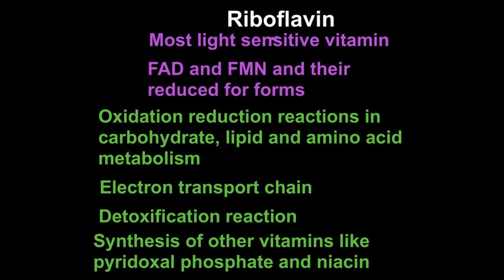The biological function of riboflavin is to make coenzymes in our body: flavin adenine dinucleotide (FAD) and flavin mononucleotide (FMN). FAD and FMN can undergo reduction to become FADH2 and FMNH2. Wherever you see FAD, FADH2, FMN, or FMNH2 participating in a reaction, that is the function of riboflavin. Riboflavin can be obtained from both plant and animal food sources.